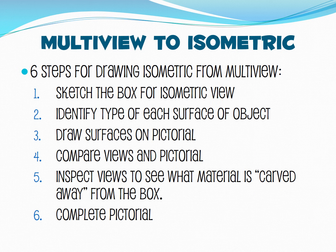Let's look at an object that has all three surfaces. Before we do that though, here's a set of six steps for drawing in isometric based on a given multi-view. The first thing we'll do is sketch the box for the isometric view, figuring out the height, width, and depth of our object. Then we'll identify the type of each surface, draw those surfaces on the isometric, compare the views, look at what has been carved away, and then complete our drawing. The way I like to think about it is if I start off with a block of wood, and then based on how the surfaces appear on the multi-view, I'm carving away blocks or chunks of that wood.